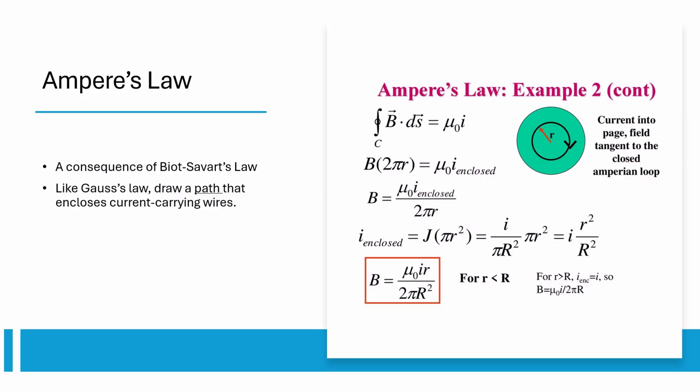Ampere's law is similar to Gauss's law in that you have to draw a shape, in this case an Amperian loop, that encloses 2D current. The integral of B-field along the loop equals μ₀ times the enclosed current. You want to draw your path so that the B-field is the same everywhere on the loop. That way you can pull B out of the integral as shown in the example derivation.